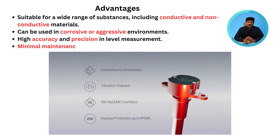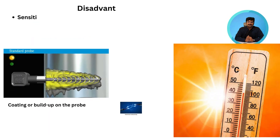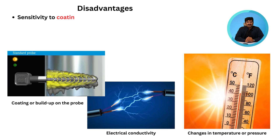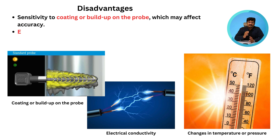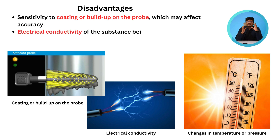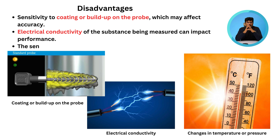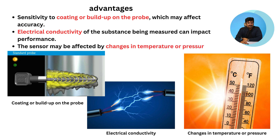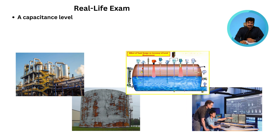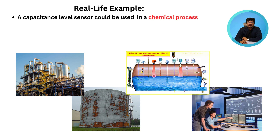Additional advantages include minimum maintenance required. Main disadvantages are sensitivity to coating or build-up on the probe, which may affect accuracy. The electrical conductivity of the substance being measured can impact the performance of the sensor. The sensor may also be affected by changes in temperature or pressure.